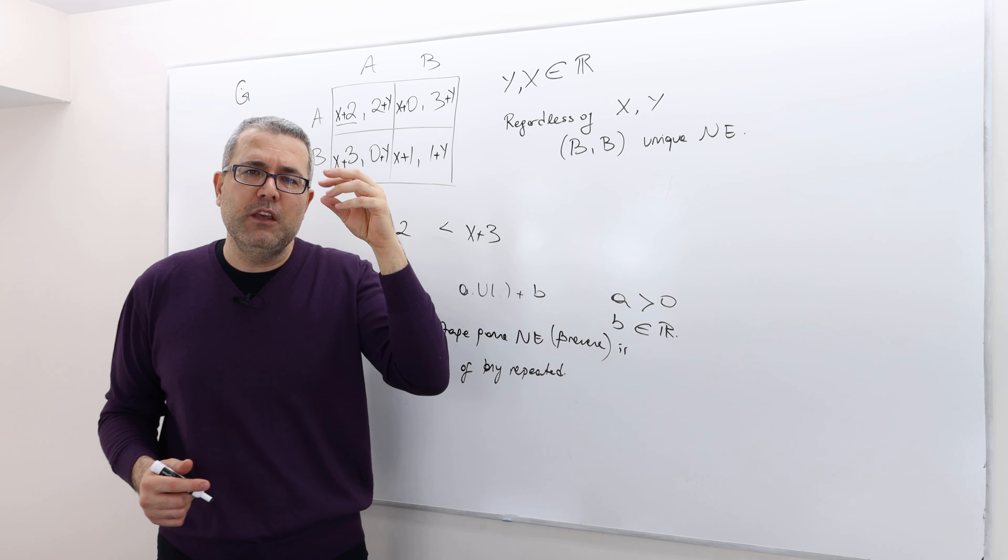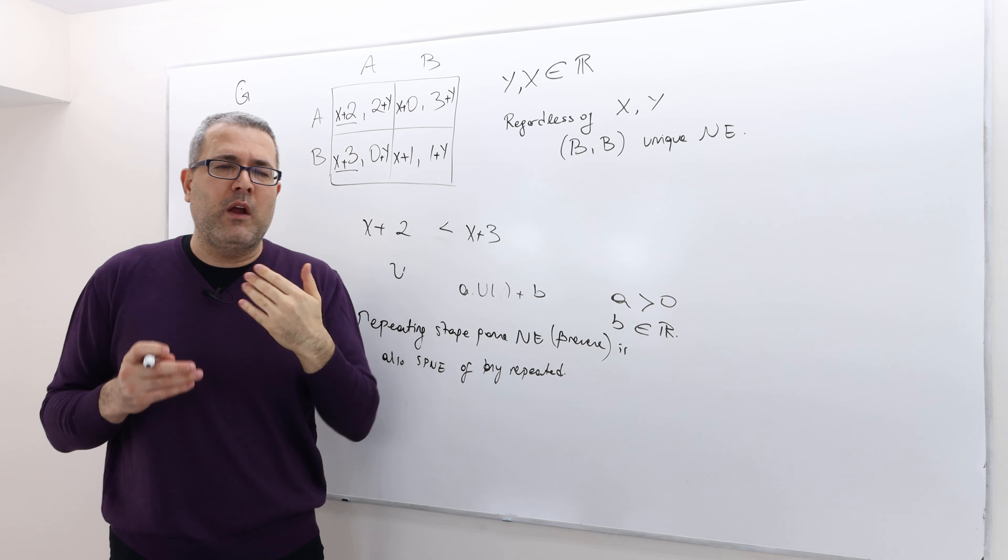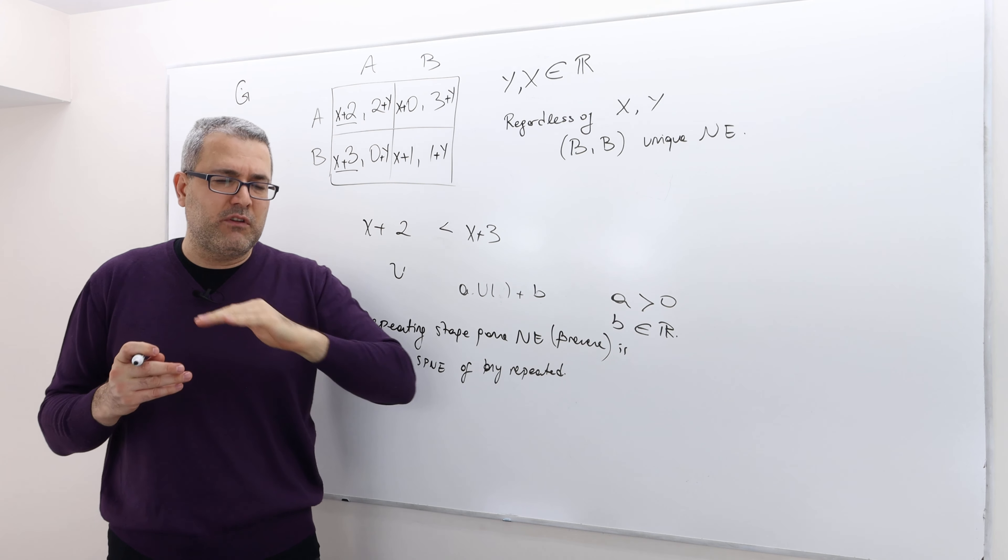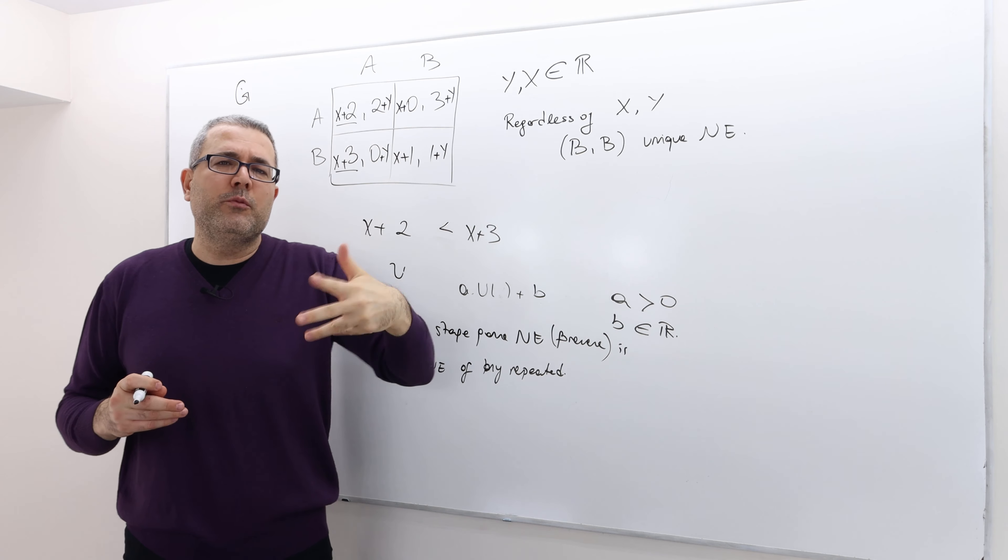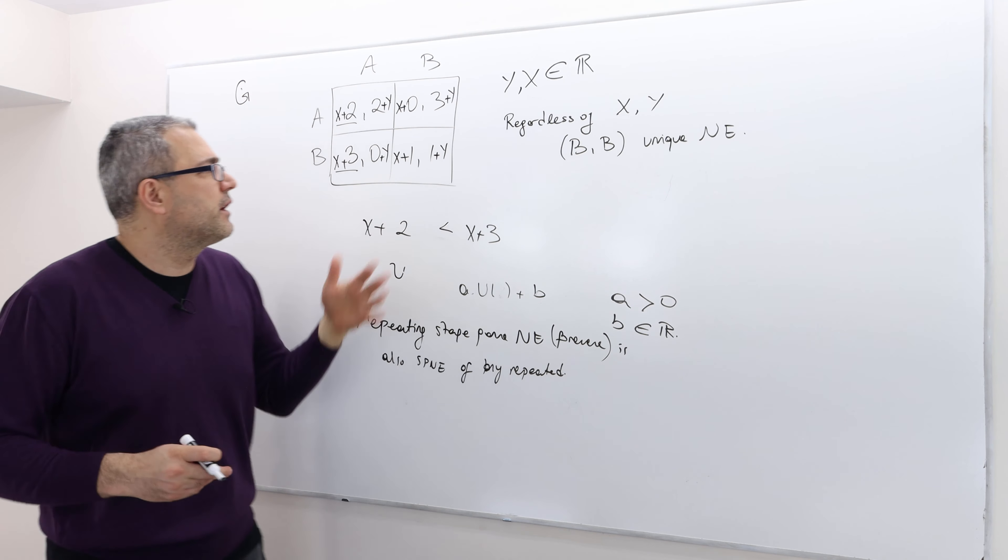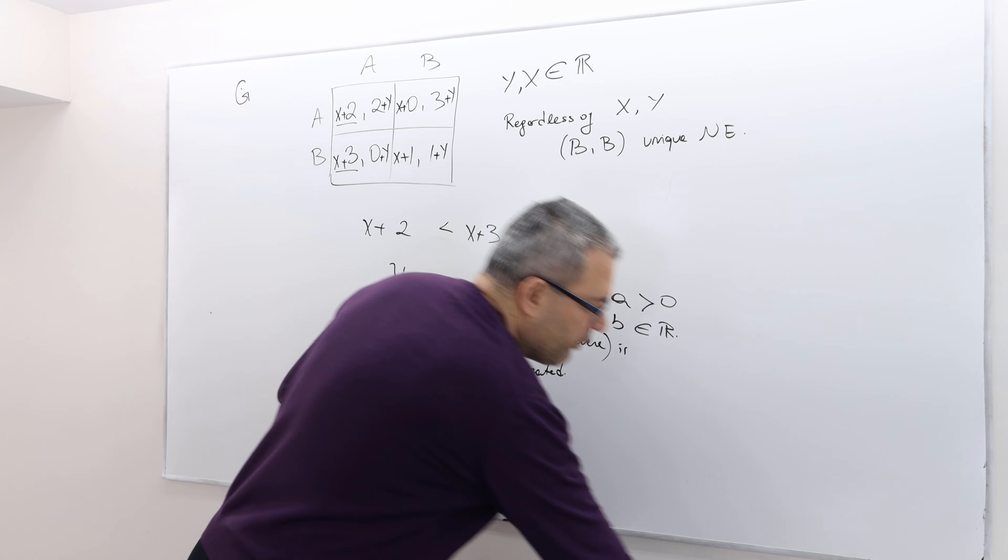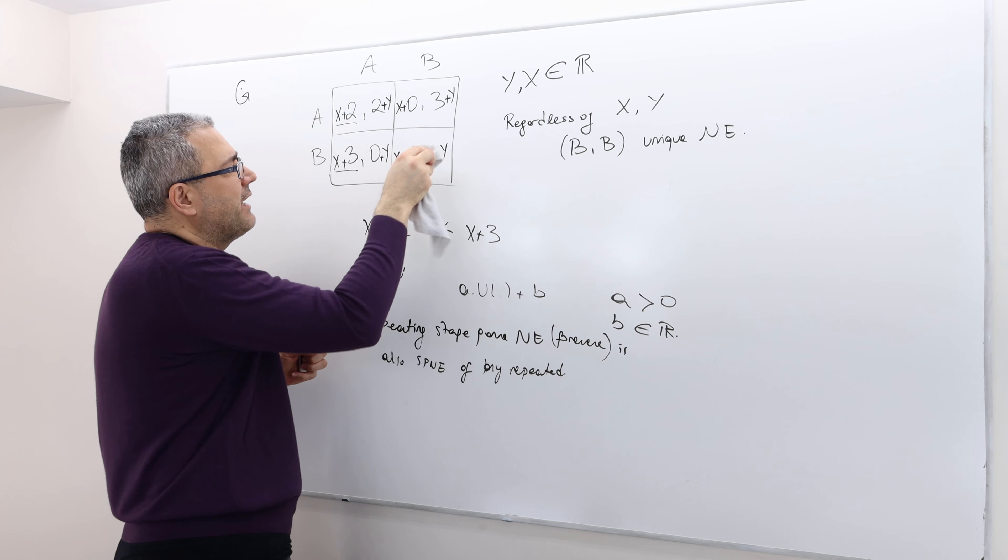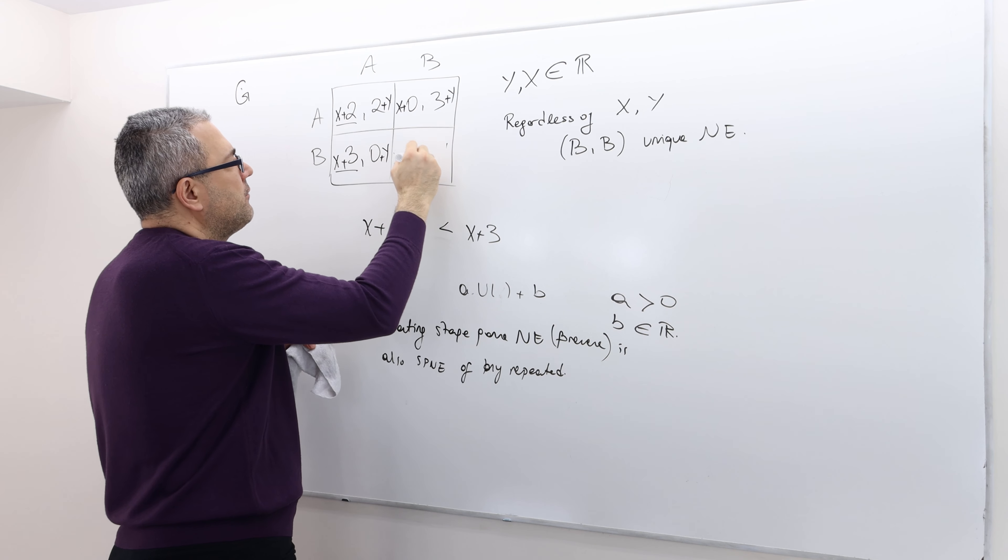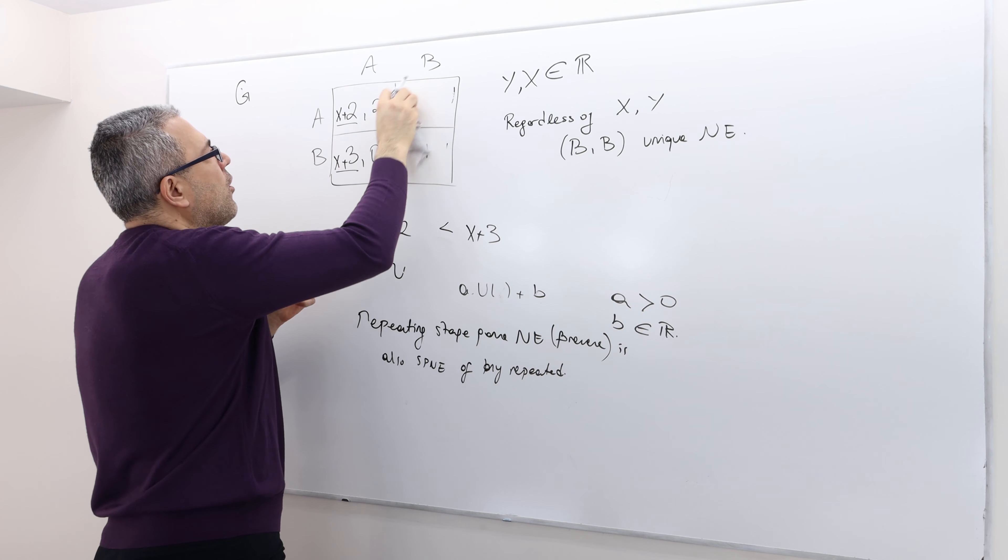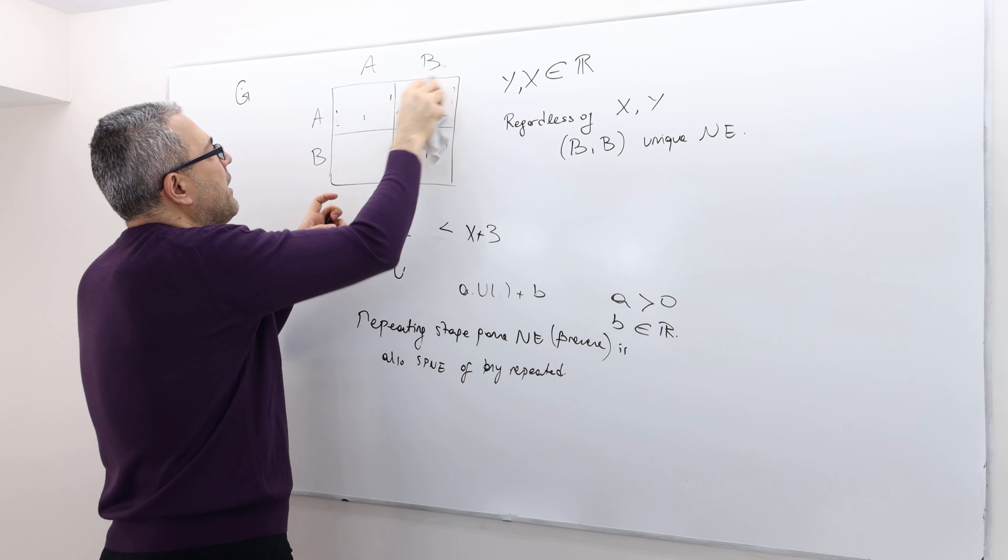Well, because if you look at this repeated game from any period, when I say look at it, it's like look at the rest of the game. Well, then repeating the Nash equilibrium again and again basically means, for example, here, the Nash equilibrium is BB, meaning we are going to play BB and get one and one payoff. So let's ignore X and Y for now. And so go back to our original payoff matrix.